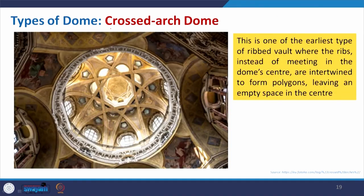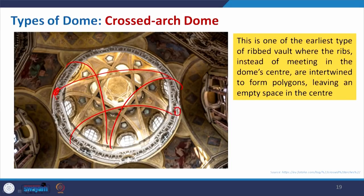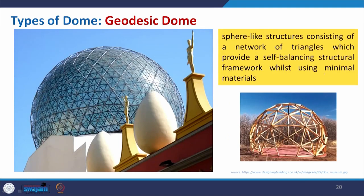The crossed arch dome is where multiple arches create an octagonal shape, or even more arches create a more polygonal shape, supported by walls. This is the crossed arch dome — one of the earliest types of ribbed vault where ribs, instead of meeting at the dome center, intersect to form polygons, as we also saw in the ribbed and clustered vault.